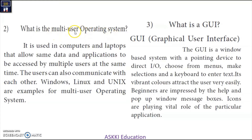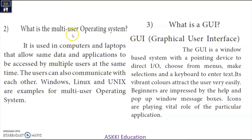Second question: What is a multi-user operating system? It is used in computers and laptops that allow the same data and applications to be accessed by multiple users at the same time. The users can also communicate with each other, and the OS allows this. Examples are Windows, Linux, and Unix.